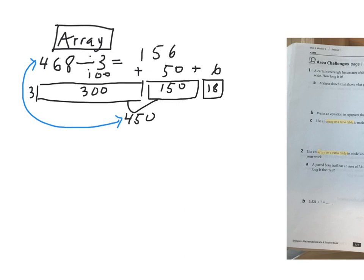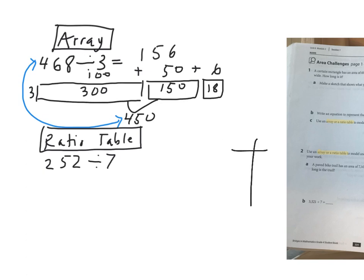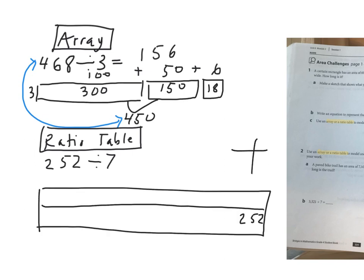That's the array method. Now let's go over the ratio table. We've done ratio tables before, but we're going to make a horizontal ratio table. My target number can go there, and then I'm going to have 1 and 7 to start.